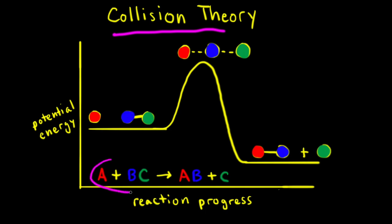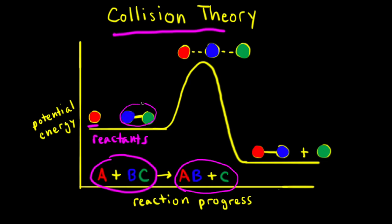Let's look at the reaction where A reacts with BC to form AB plus C. On an energy profile, we have the reactants on the left — atom A is colored red, and molecule BC is over here. These two particles must collide for the reaction to occur, and they must collide with enough energy to overcome the activation energy barrier. The activation energy on an energy profile is the difference in energy between the peak, which is the transition state, and the energy of the reactants. This energy is our activation energy — the minimum amount of energy necessary for the reaction to occur.